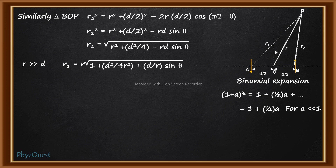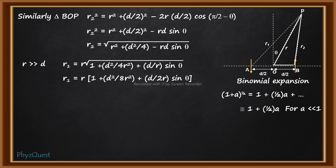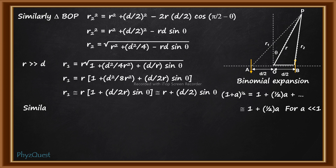Using the binomial expansion on r1 and noting that d²/(8r²) is negligible when r >> d, we get r1 = r(1 + d/(2r) sin θ), which simplifies to r1 = r + (d/2) sin θ. Similarly, r2 = r − (d/2) sin θ.